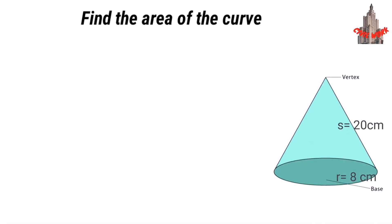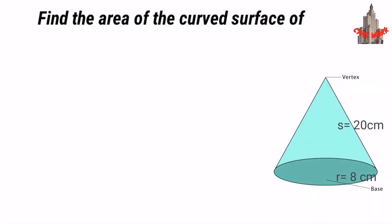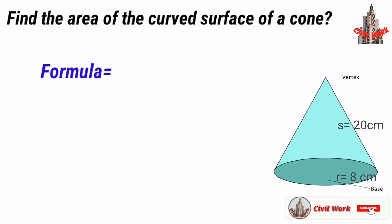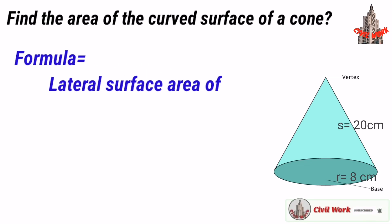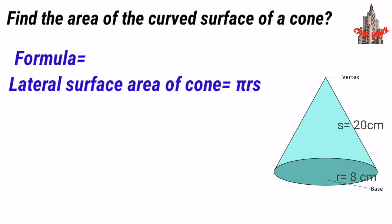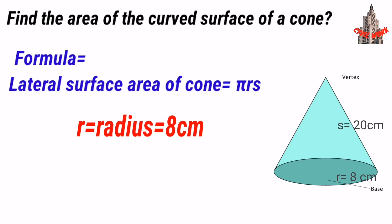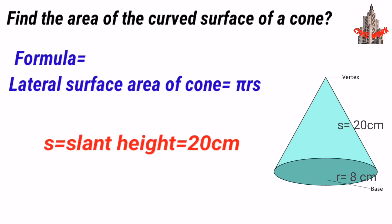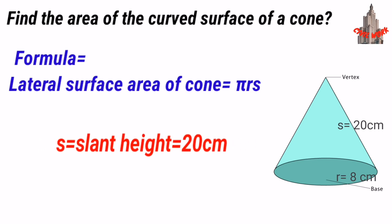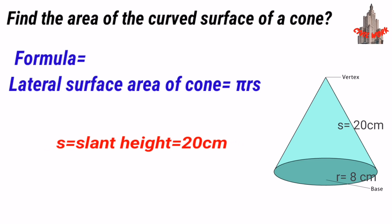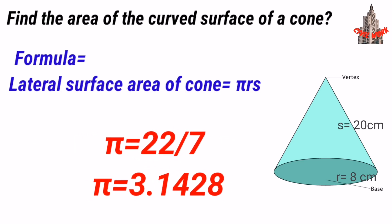To find the area of the curved surface of a cone, the formula for lateral surface area of a cone is equal to π × r × s. Here r is the radius, which is given as 8 cm. Next, s is the slant height, which is given as 20 cm.